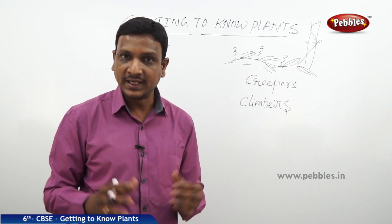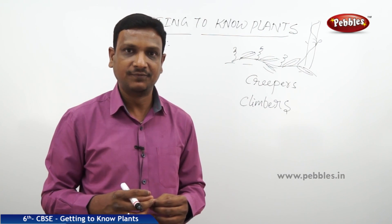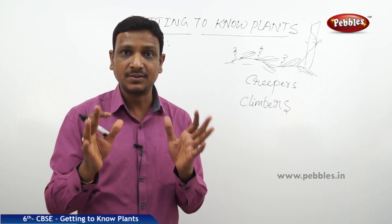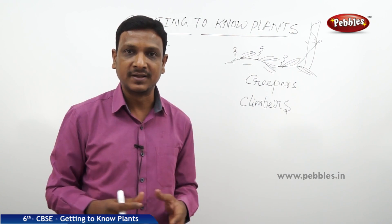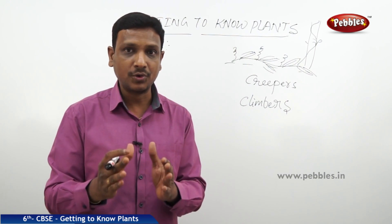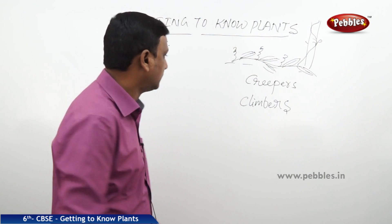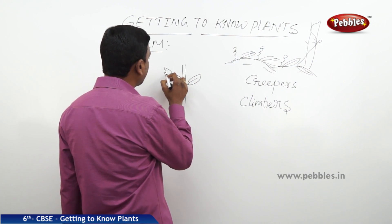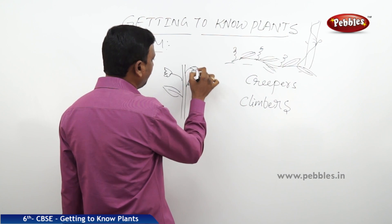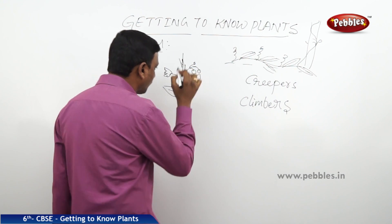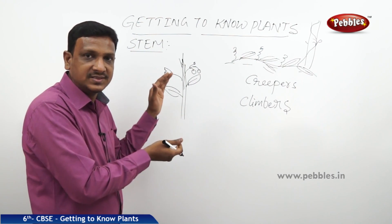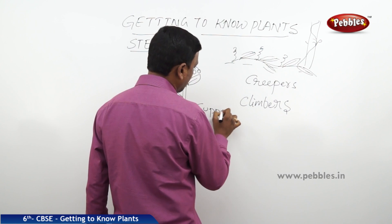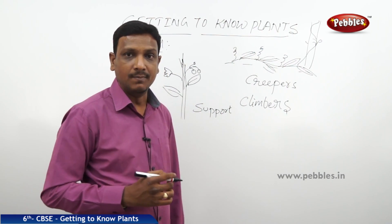Now let us explore the different parts of the plant. First, let us discuss the stem. The stem is the main part of the plant — it gives support. The main function of the stem is to provide support, and all other parts are accommodated on it. The stem has leaves and, in some cases, flowers and fruits.